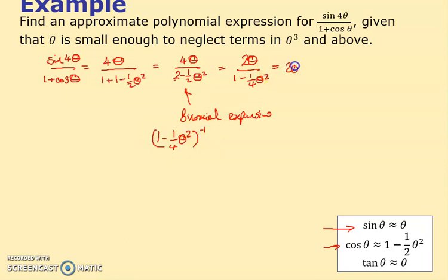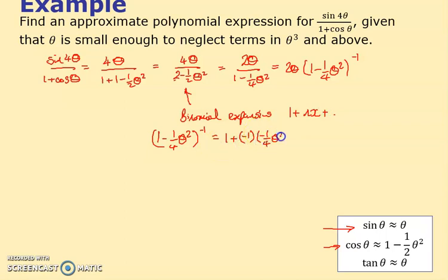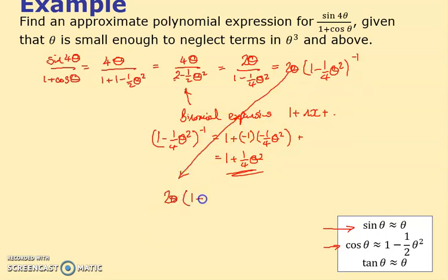The bottom is really one minus one quarter theta squared to the power of minus one — this is a binomial expansion. Using the one plus nx formula with n equals minus one and x equals minus one quarter theta squared, we get one plus one quarter theta squared. So the expression is 2θ times one plus one quarter theta squared, giving 2θ plus one half theta cubed. Since theta cubed terms are ignored, the answer is 2θ.